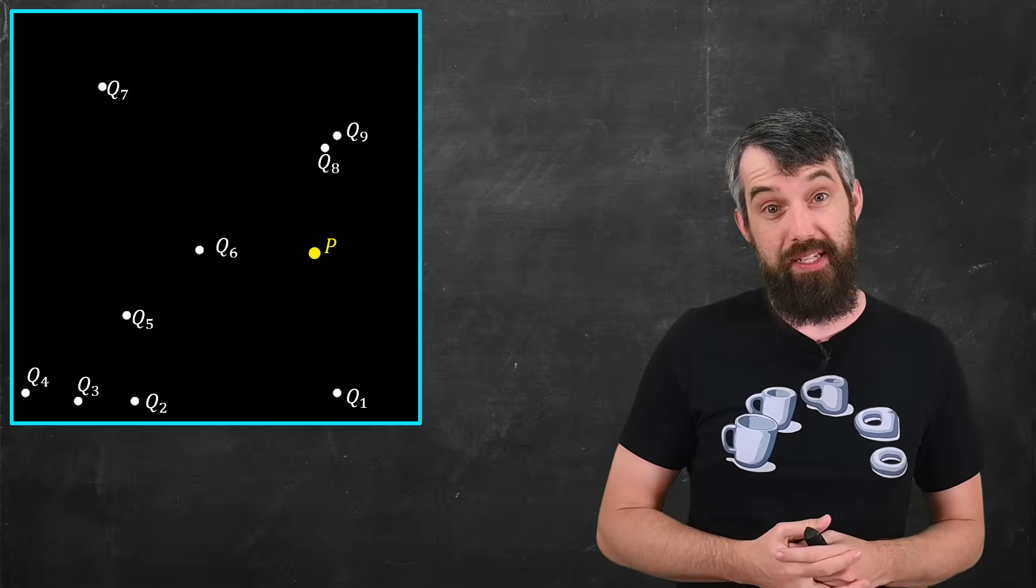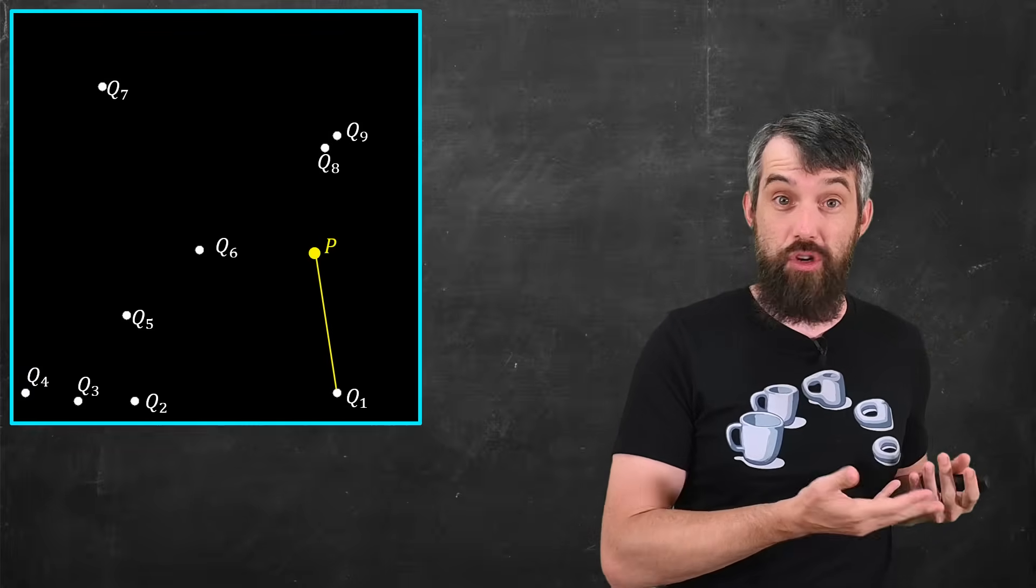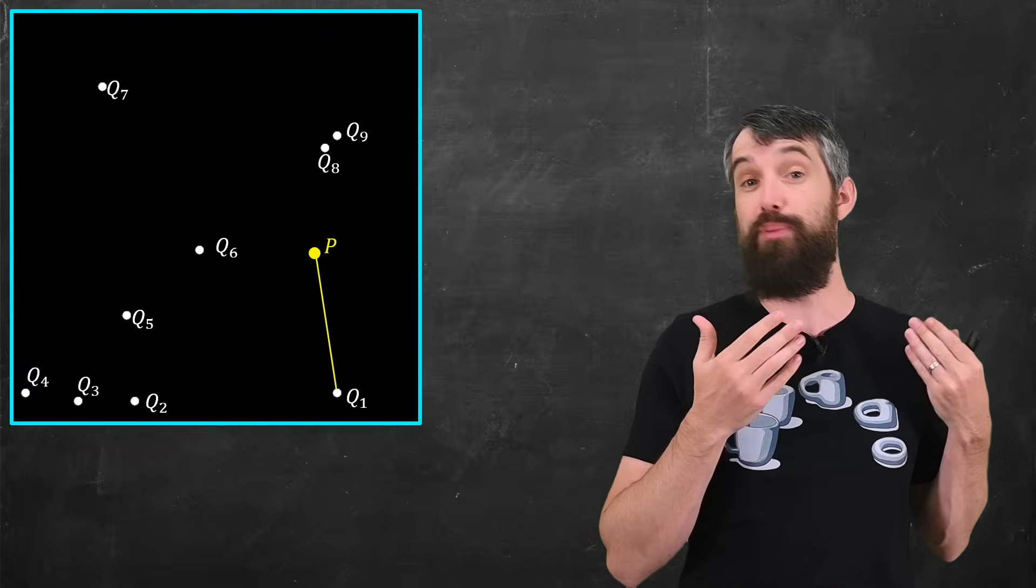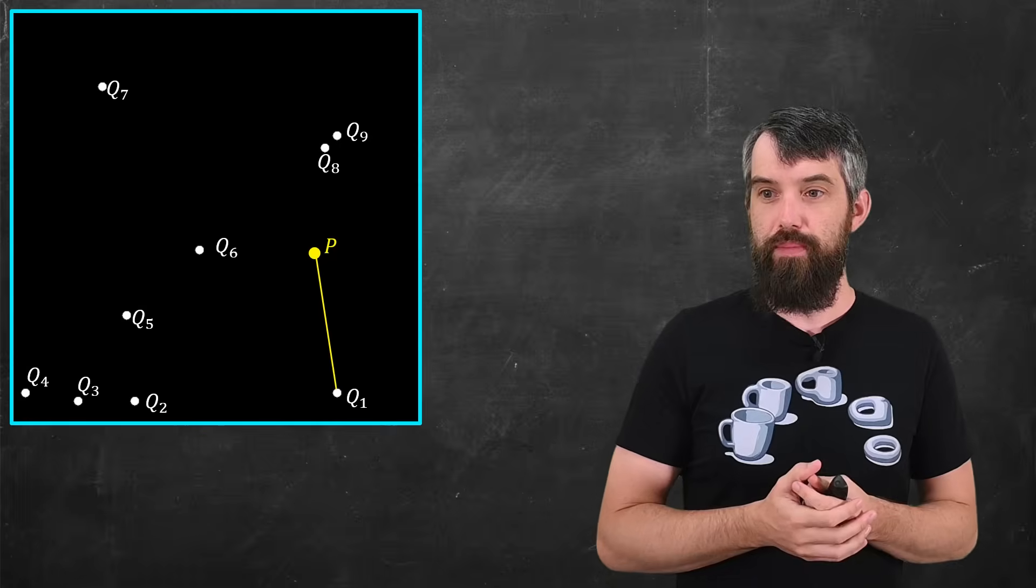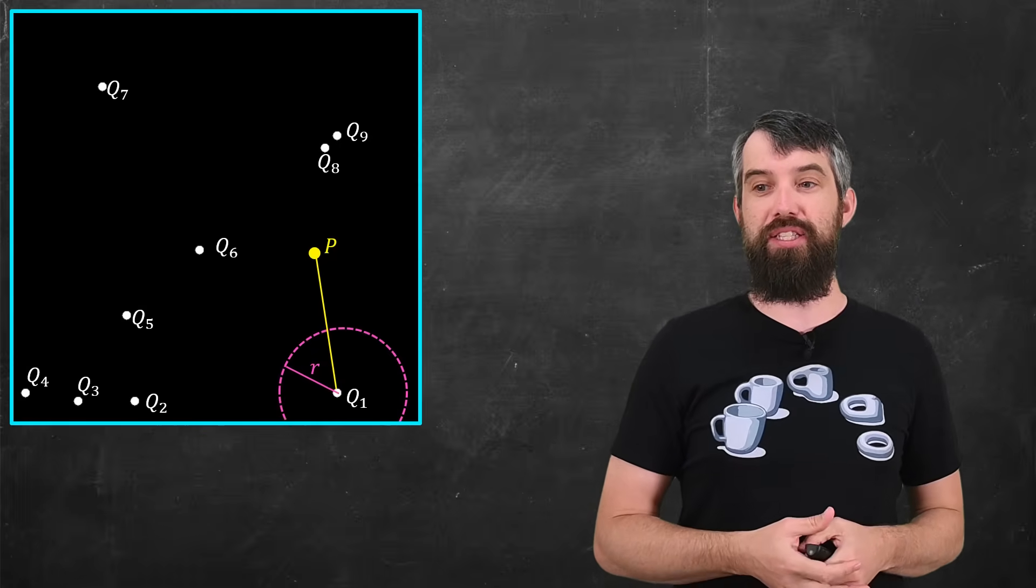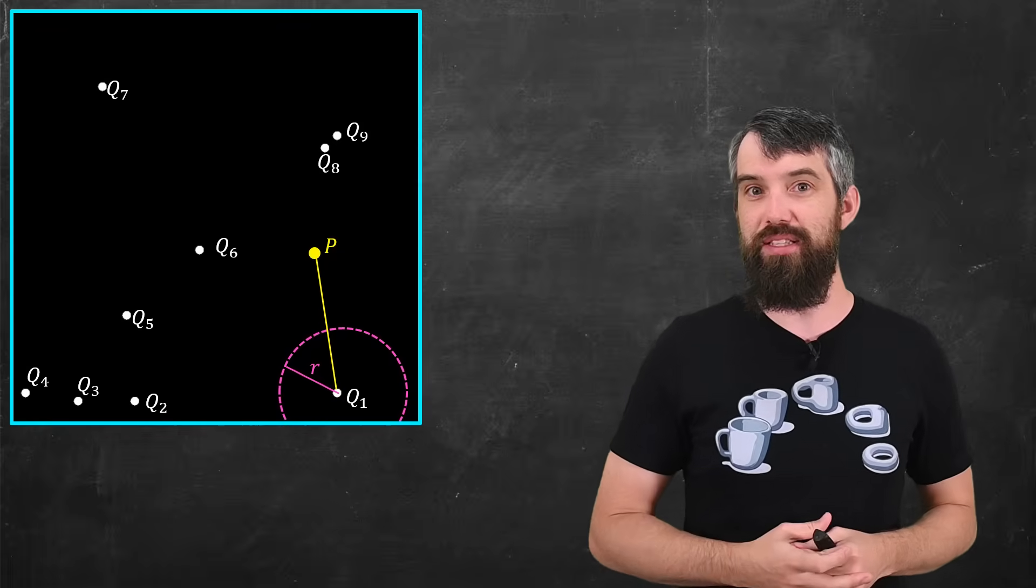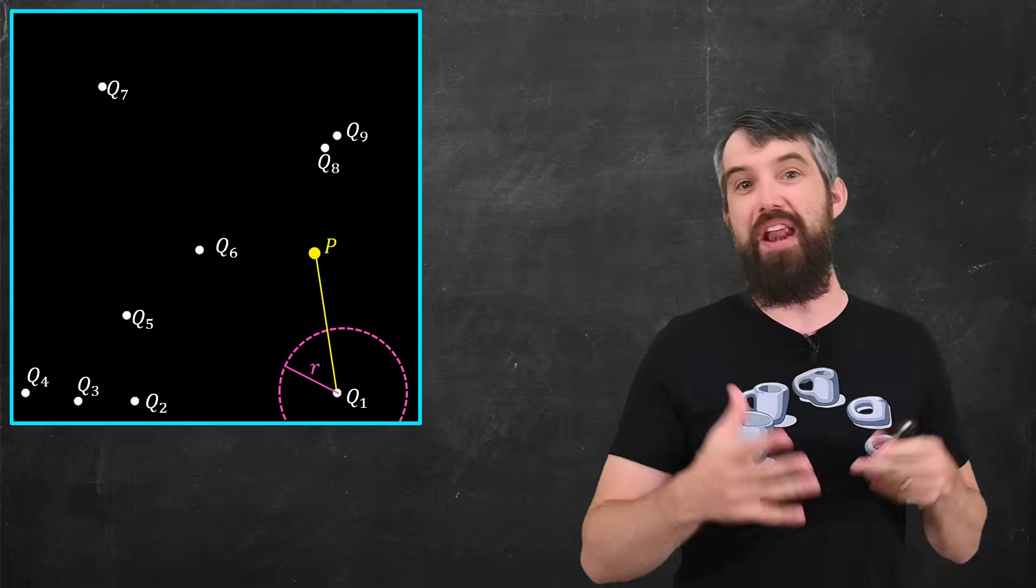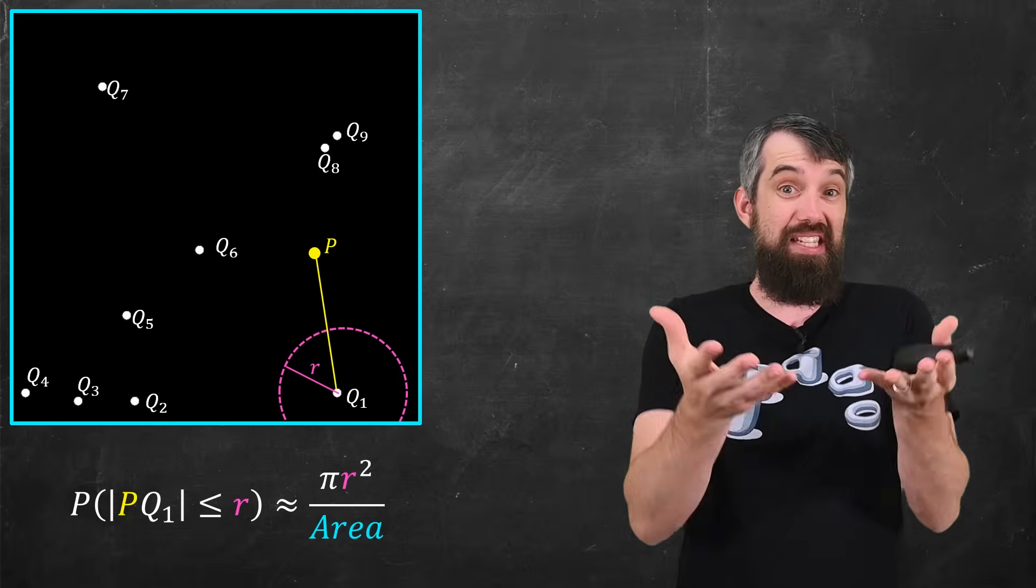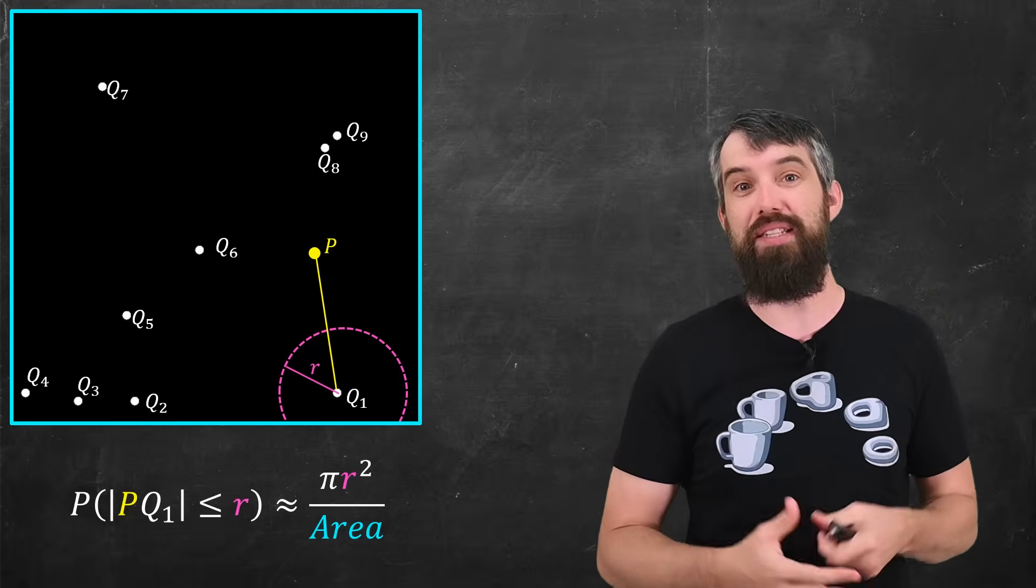We're going to focus on the distance between P and all of the Qs, but for the moment, let's just focus on the distance between P and Q1. Okay, the crystal of Q1 grows for a while, and it's going to create a little circle of radius R. So my question is, if P is thought of as a random point, what's the probability that it's inside the circle or not inside the circle?